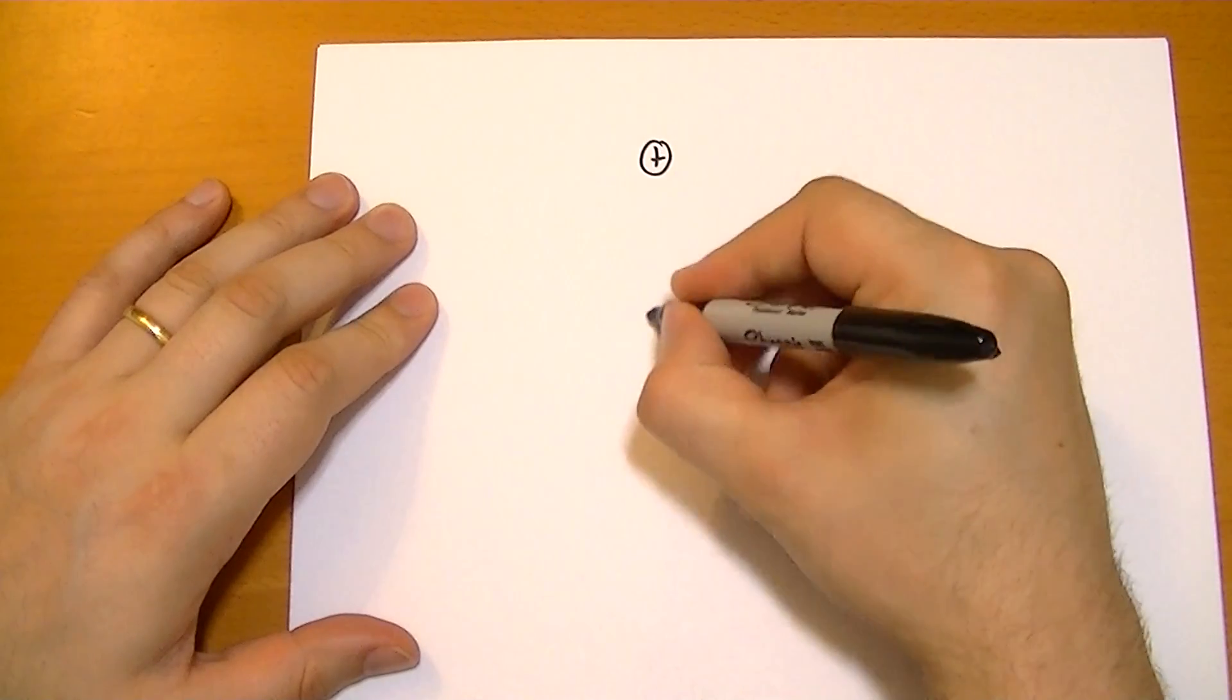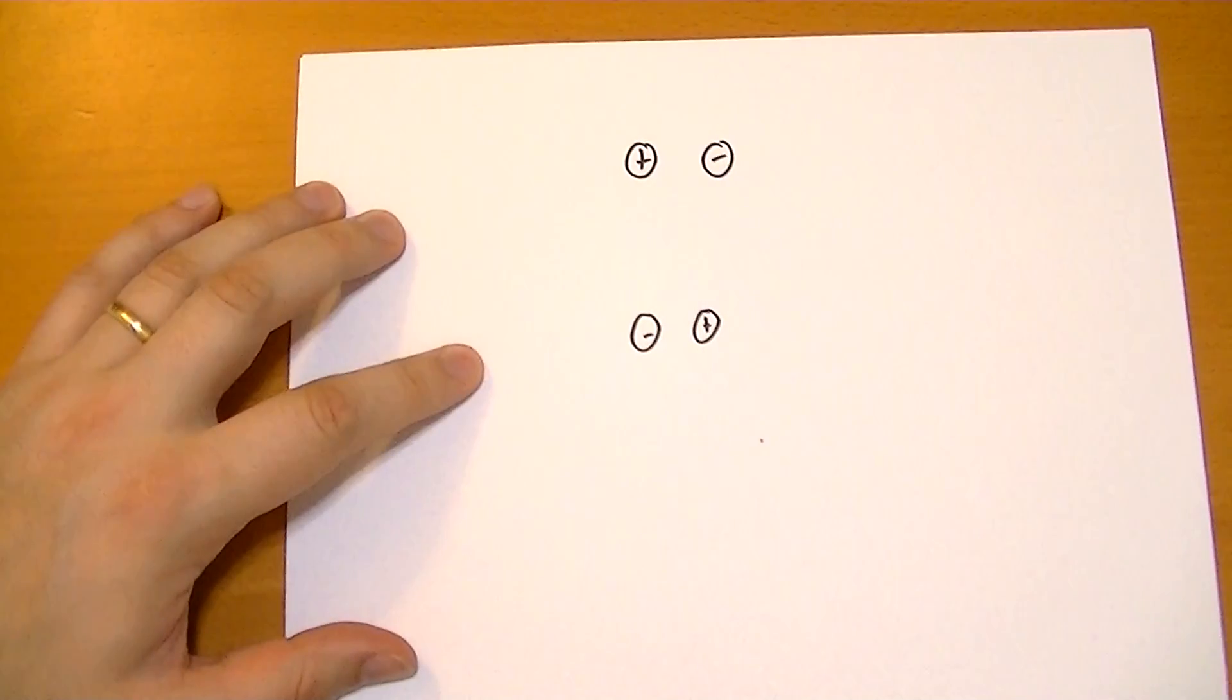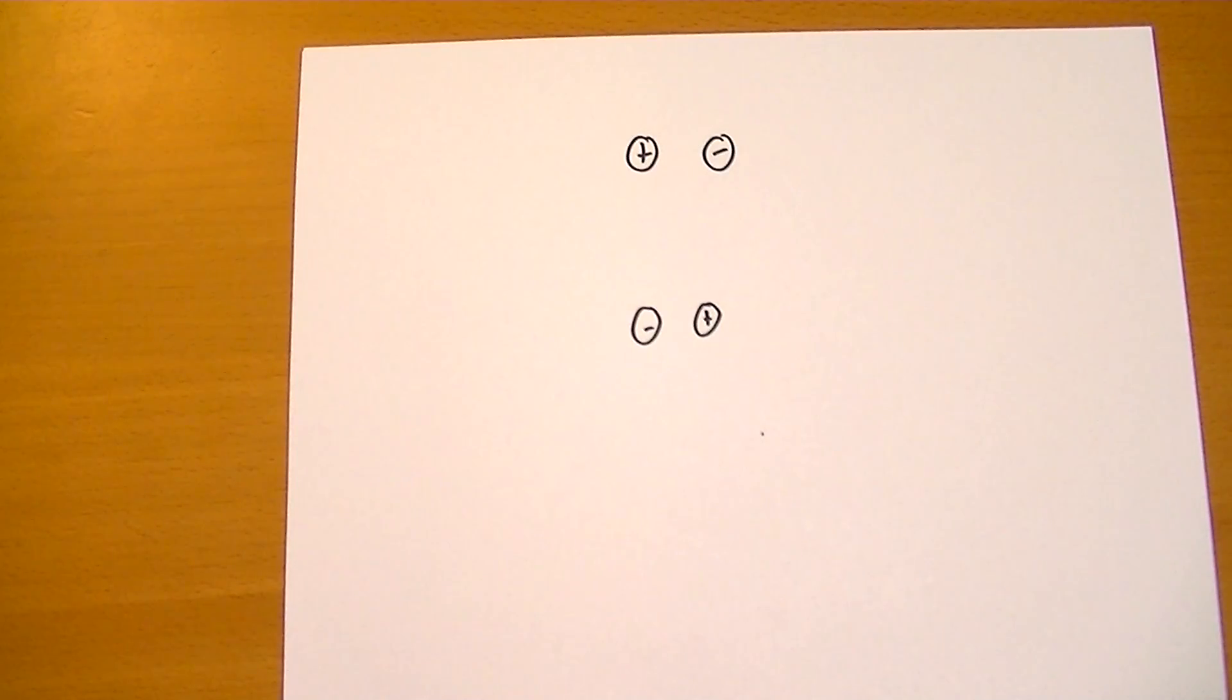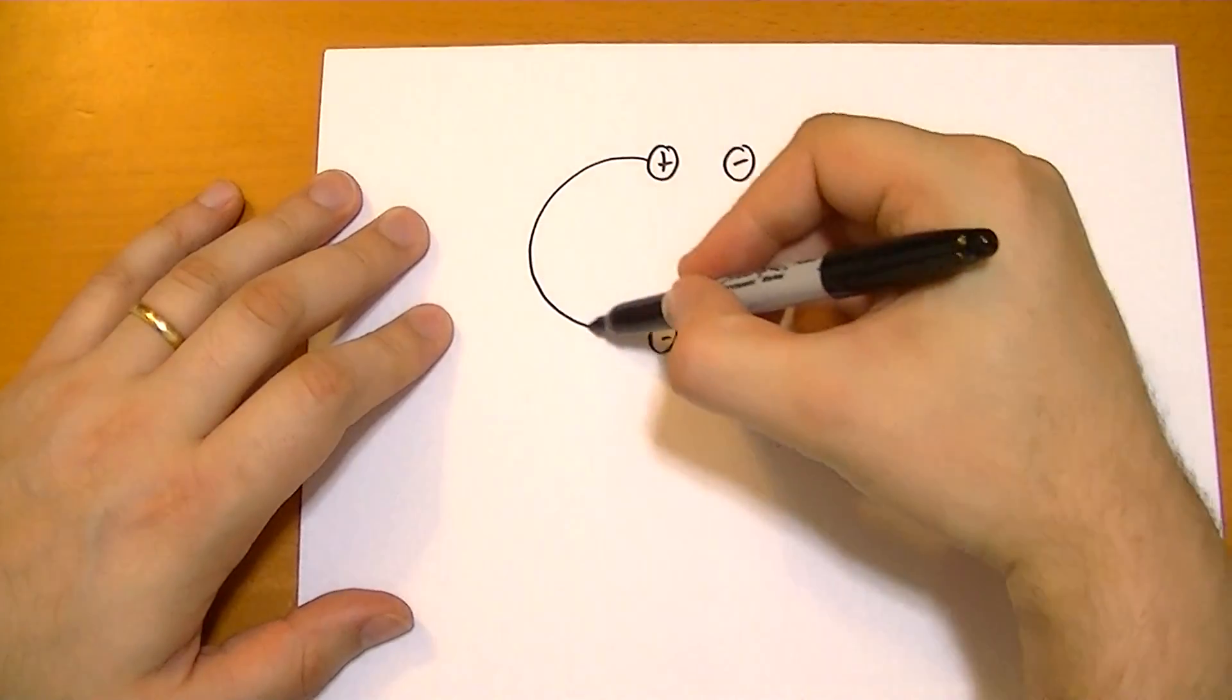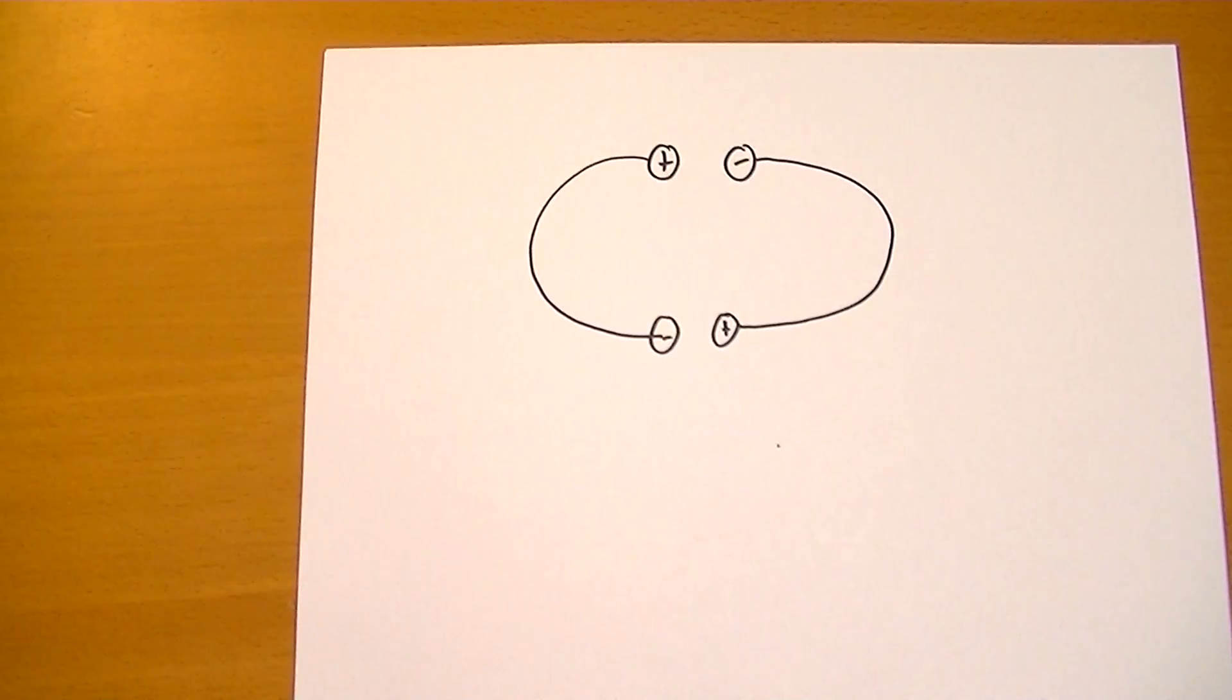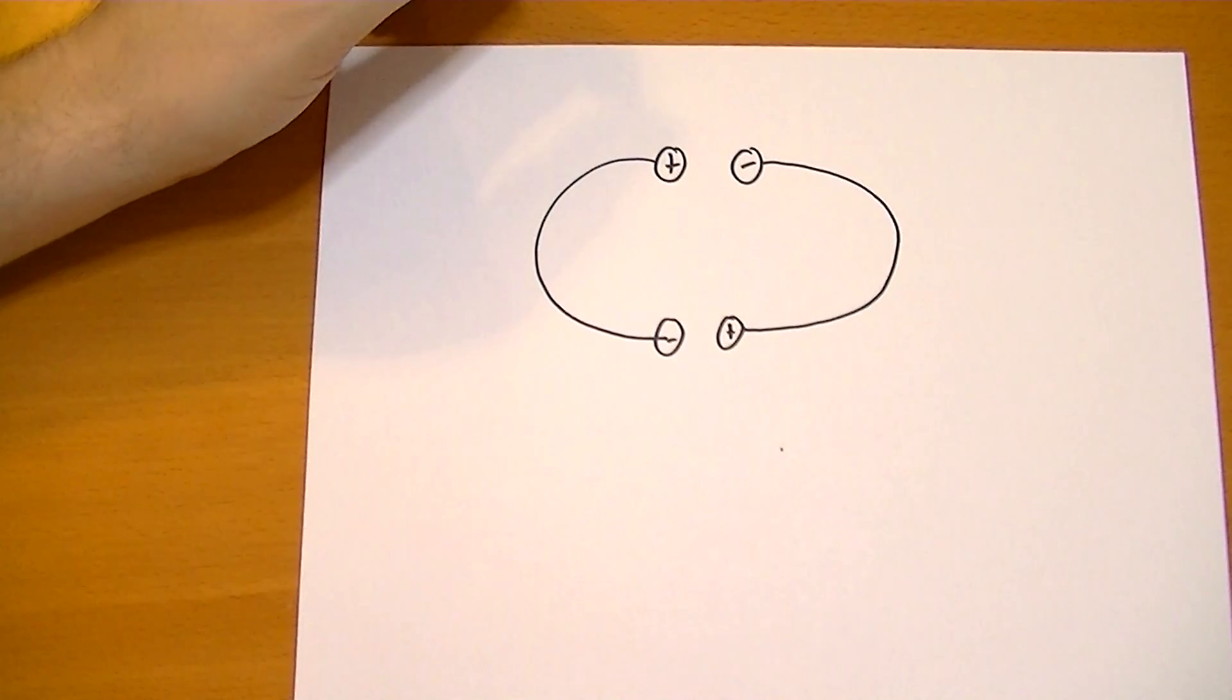And we're going to use Purcell's example. So he says, suppose you have a charge configuration like this. You have four conductors. These are all like conducting little tiny balls. And then you have some electric field that sets up. And then suppose that we take a conductor and connect these two guys to each other like this. And the question is, do those charges stay there, or do they move? And your first thought might be, well, these charges attract each other, so they're probably going to stay there.